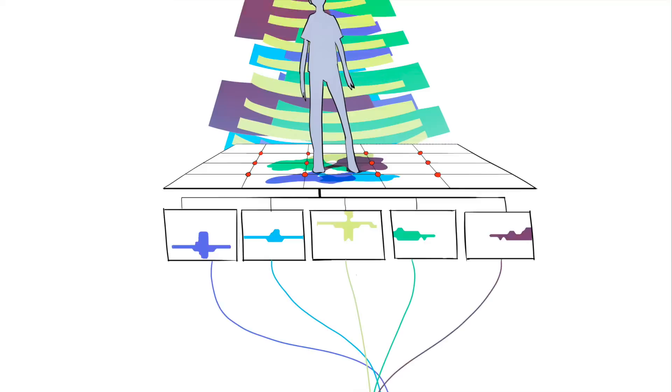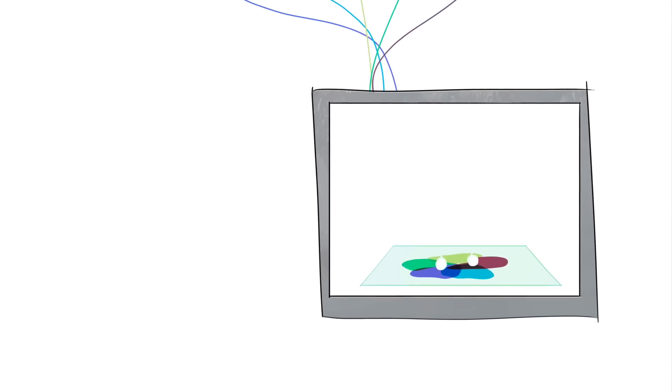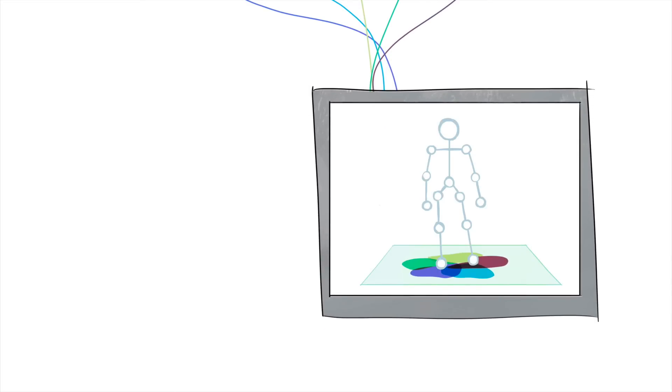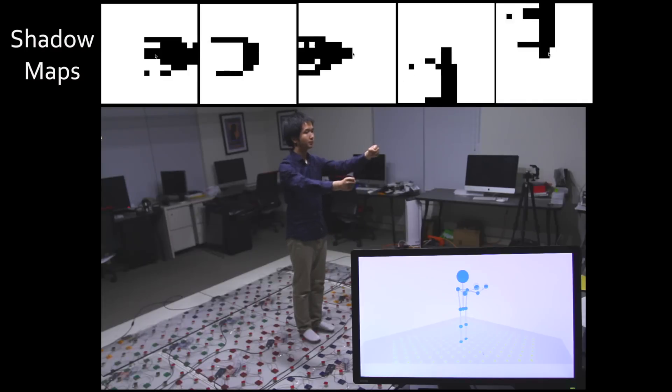We can then use these shadow maps to reconstruct a user skeleton in three-dimensional space, tracking motion in real time and allowing users to interact with their environment using just light around them.